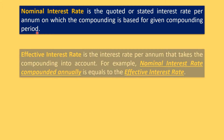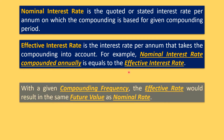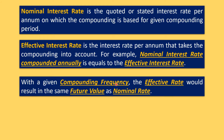An effective interest rate is the interest rate per annum that takes compounding into account. A nominal rate compounded annually is equal to an effective interest rate. With a given compounding frequency, the effective rate would result in the same future value as the nominal rate if the compounding frequencies are the same.